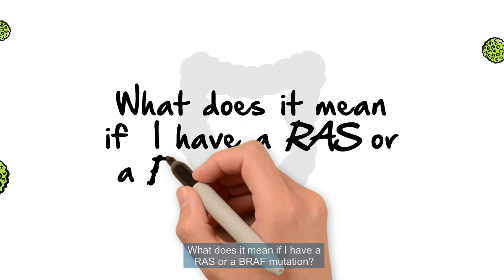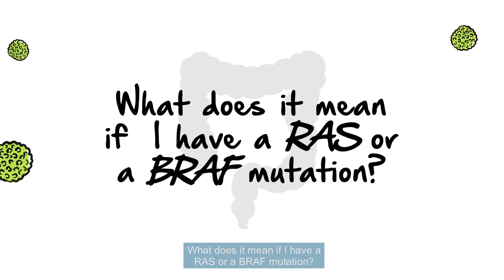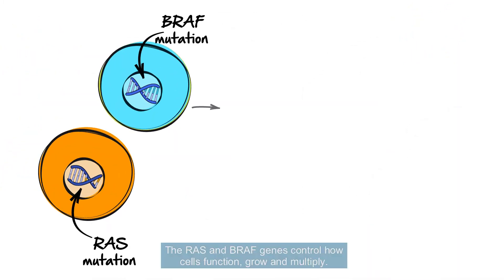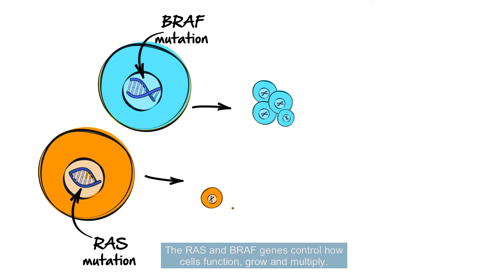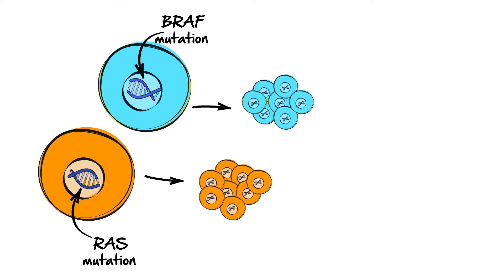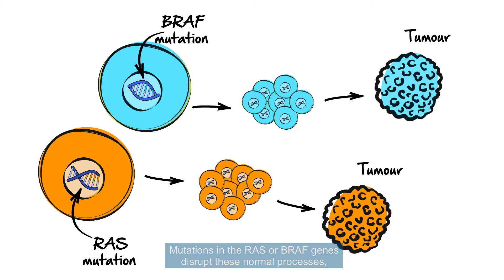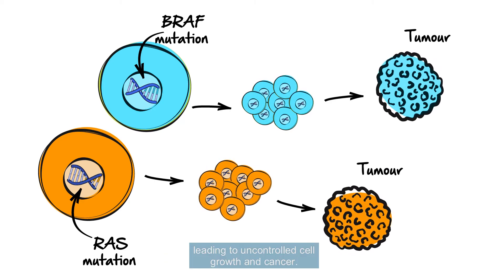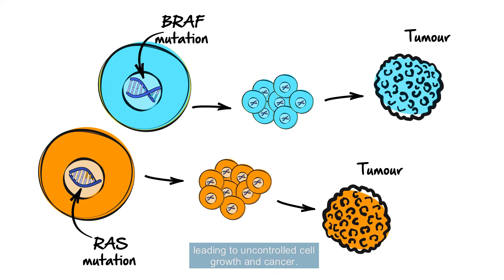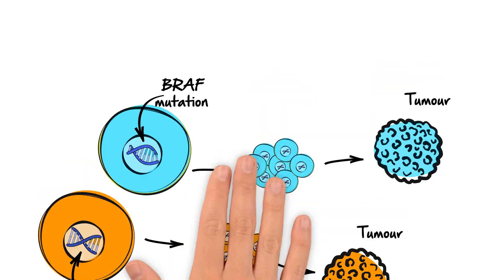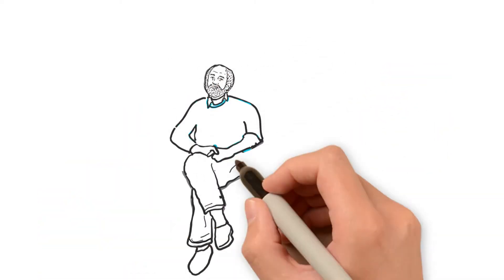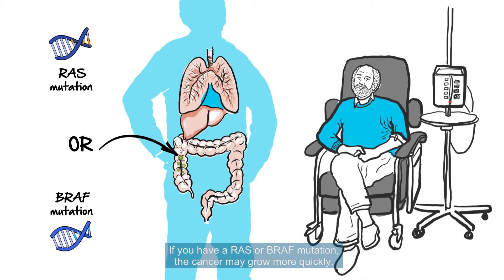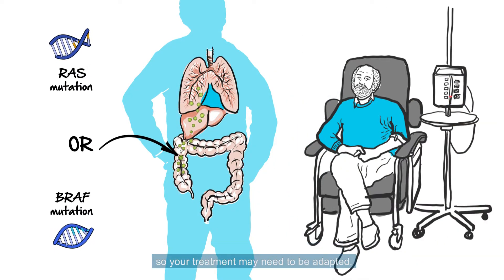What does it mean if I have a RAS or a BRAF mutation? The RAS and BRAF genes control how cells function, grow and multiply. Mutations in the RAS or BRAF genes disrupt these normal processes, leading to uncontrolled cell growth and cancer. If you have a RAS or BRAF mutation, the cancer may grow more quickly, so your treatment may need to be adapted.